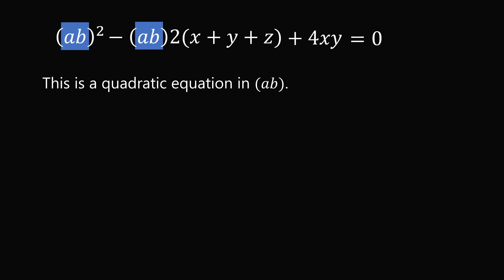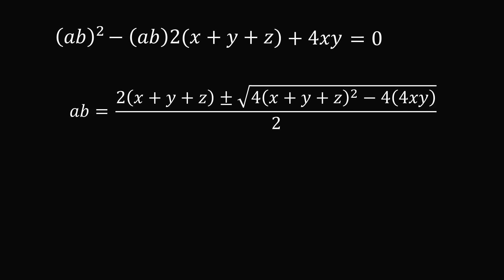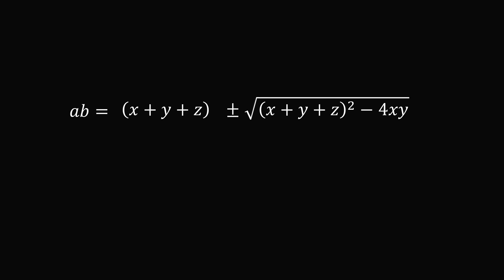So we can then use Brahmagupta's quadratic formula. We can solve that AB is equal to the opposite of this middle term, plus or minus the square root of this middle term squared, minus 4 times the product of the coefficient on AB squared, times the constant term 4XY. And this will all be over 2 times the coefficient on AB squared, which will be equal to 2. How can we simplify this? Notice we have a 4 here and a 4 here. We can pull this outside the square root, and that will be equal to 2. We then have a factor of 2, which will cancel out. So we just have AB is equal to X plus Y plus Z, plus or minus the square root of the square of X plus Y plus Z, minus 4XY.